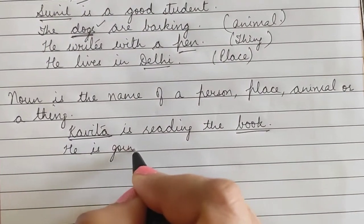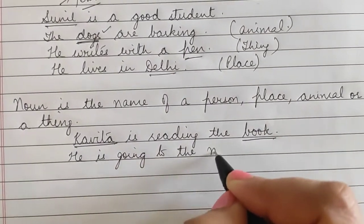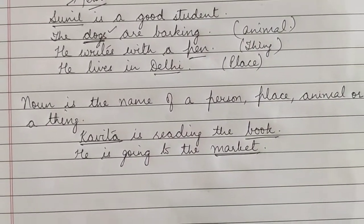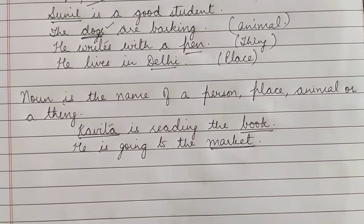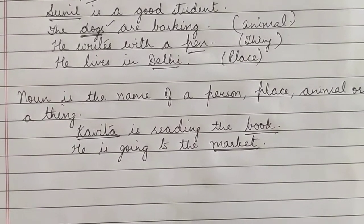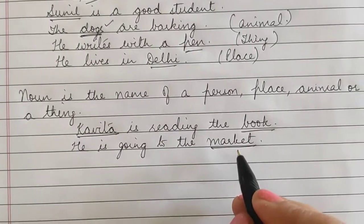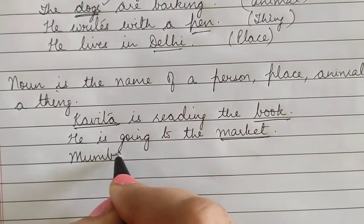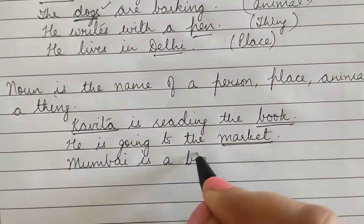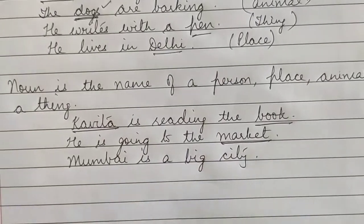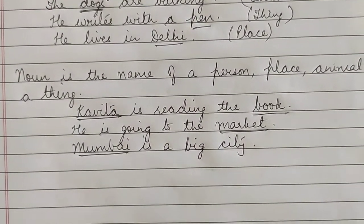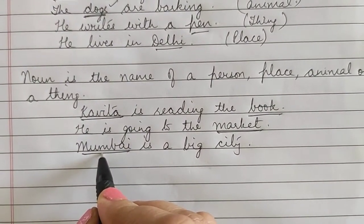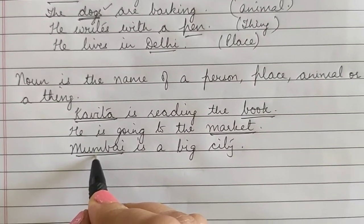He is going to the market. What is market here? It is the name of a place, so this is also a noun. Market is also a noun because it is the name of a place. Mumbai is a big city. Here Mumbai is the name of a city, so this is also a noun because it is the name of a place.